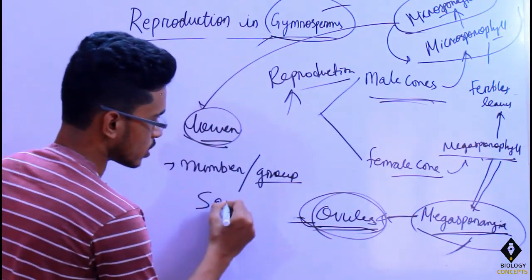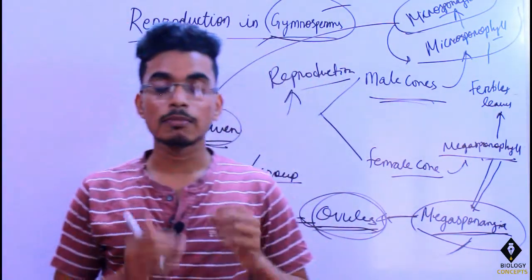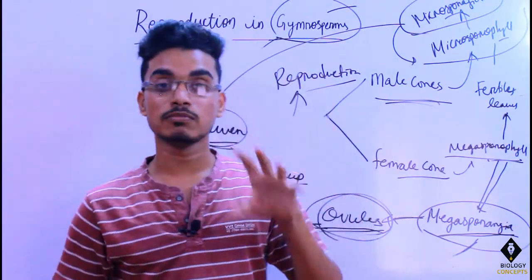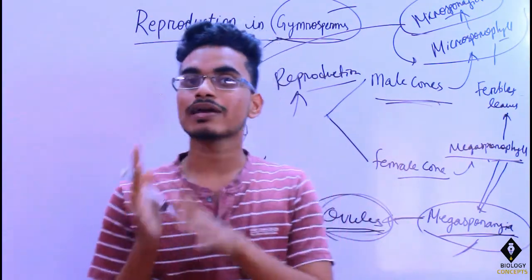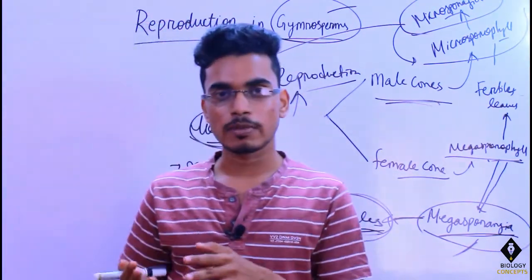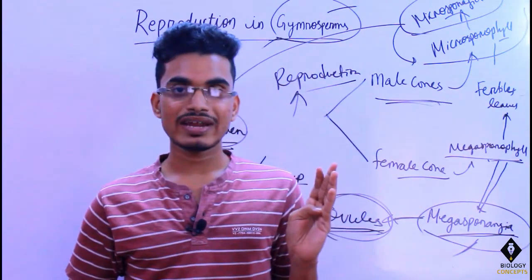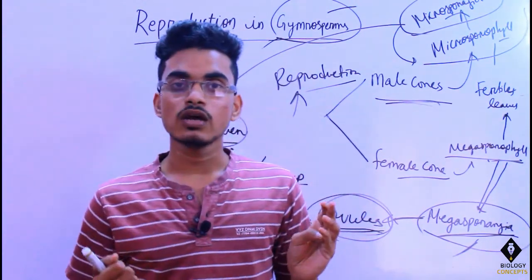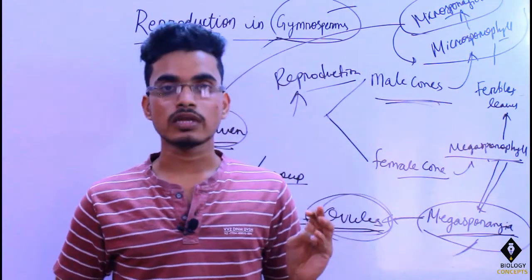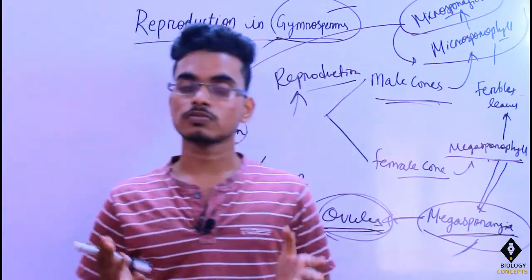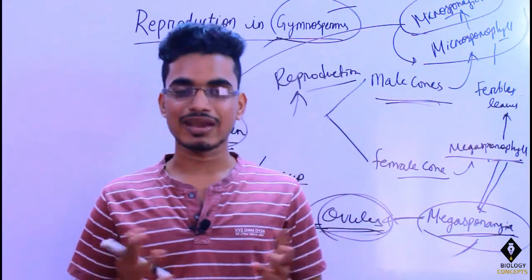This is all about the position of microsporangia. This is part one of reproduction in gymnosperms. In this part we discussed microsporangia, megasporangia, microsporophylls, megasporophylls, and male and female cones. In the coming video we are going to discuss the gametophytic generation and embryogeny, which is a very important part of reproduction in gymnosperms. Watch that video to completely understand reproduction in gymnosperms. Have a nice day, thank you.